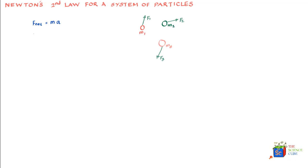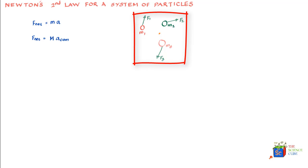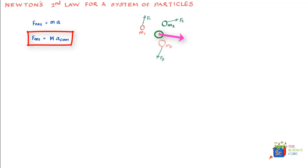So let's see what those conditions are. The left-hand side would be nothing but the vector sum of all forces acting on the system — that is, the vector sum of f1, f2, and f3 — and this needs to be equated with the sum of the masses, capital M, which is m1 plus m2 plus m3. We take the acceleration as the acceleration of the center of mass, which resides somewhere within the system, representing the entire system as if all the mass resides there.